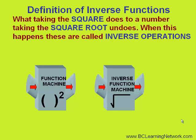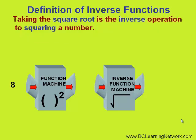What squaring does to a number, taking the square root undoes. When this happens, these are called inverse operations. Taking the square root is the inverse operation to squaring a number. We'll demonstrate with the number 8 below. First, we'll put our 8 into the function machine that squares the number. When 8 is squared, you get a perfect square of 64. Next, we'll put it into our inverse function machine that does the opposite of squaring — it will take the square root of the number. And when we take the square root of 64, we get 8, the number we started with.